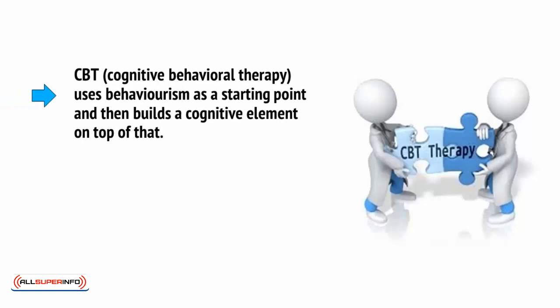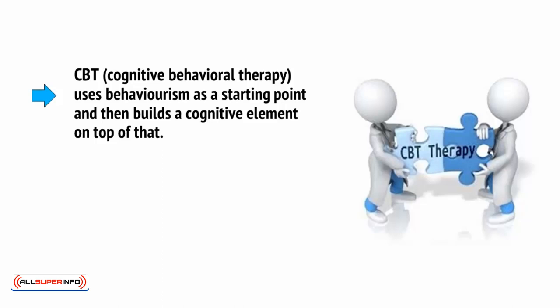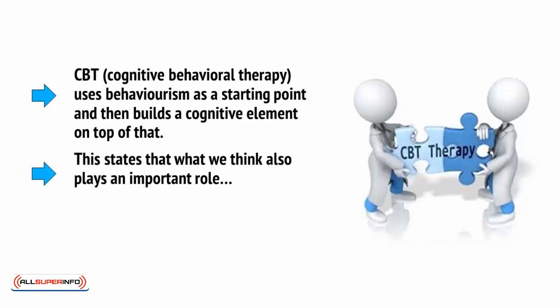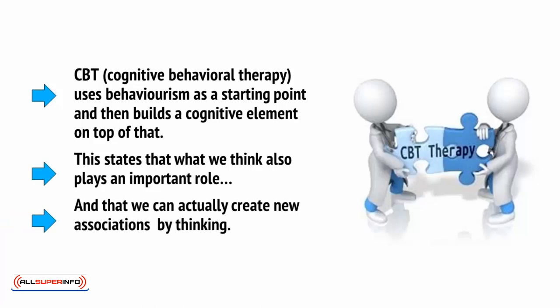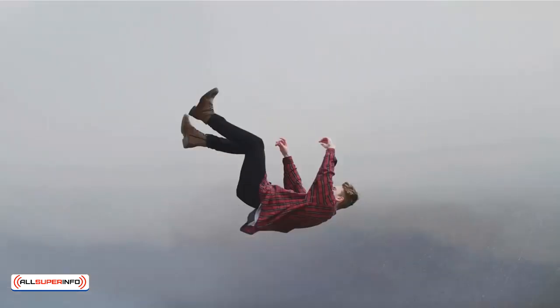CBT, Cognitive Behavioural Therapy, uses behaviourism as a starting point and then builds a cognitive element on top of that. This states that what we think also plays an important role and that we can actually create new associations by thinking. In other words, if you think about falling, this can create new neural connections as though you were falling, and that in turn can lead to the formation of a phobia or to changes in personality.